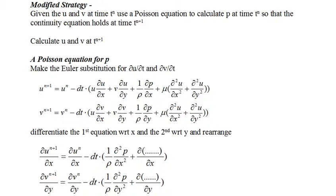First, we derive the Poisson equation for pressure, starting with the momentum equations and making the FDM substitutions for the time derivatives only, as shown. Differentiating the first equation with respect to x and the second with respect to y, we have the two equations shown at the bottom of the page. Note that we have second derivatives of pressure inside the parenthesis, and we have grouped all the derivatives of u and v inside the parenthesis and replaced them by dots. We will see why on the next slide.